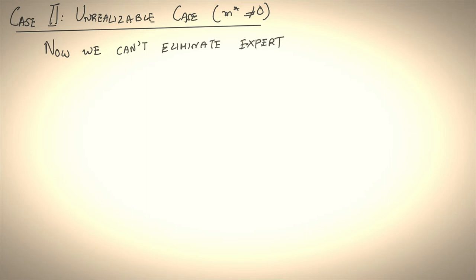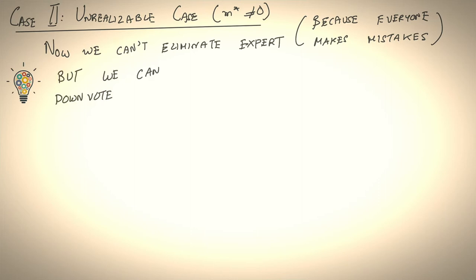Okay, now let's make things interesting. Now let's look at the unrealizable case where m star is not equal to zero. It can be greater than zero. In this scenario, we can't really eliminate experts because every expert makes mistakes. But we can take inspiration from the halving algorithm and instead of eliminating experts, we can choose to downweight the experts. So if we were doing a weighted combination of experts, we set the weight of an incorrect expert to be, let's say, half.